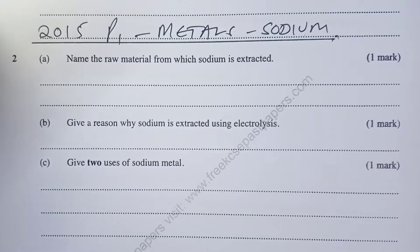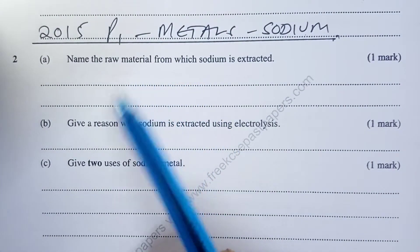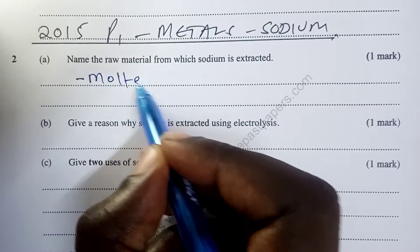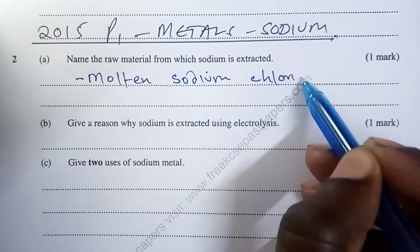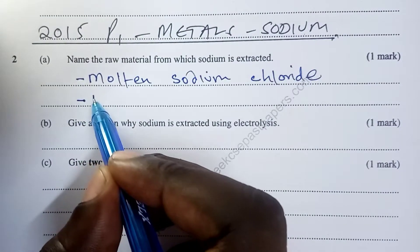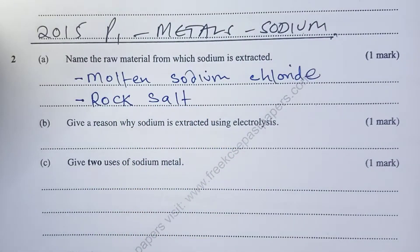So we begin with 2015 KCSE chemistry paper one question number two, where we were asked: name the raw material from which sodium is extracted. The answer expected here is molten sodium chloride, that is the raw material from which sodium metal is extracted. A student had the option of mentioning the ore, and for that matter rock salt was also acceptable for one mark.